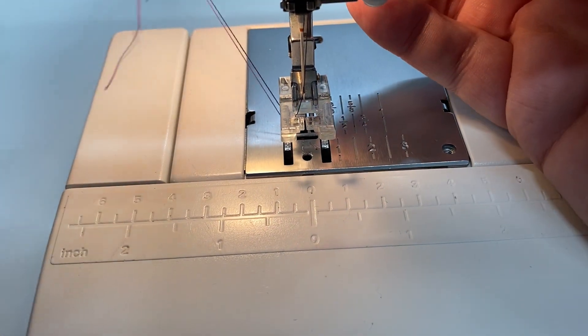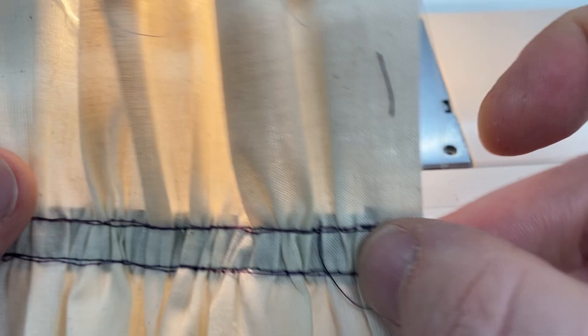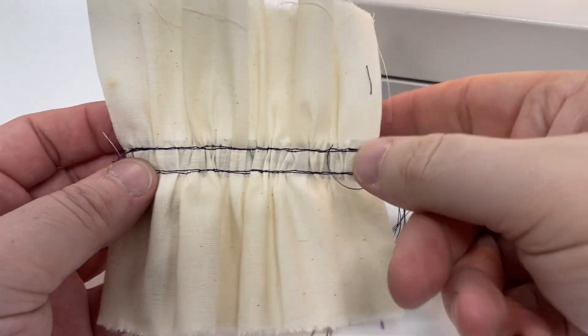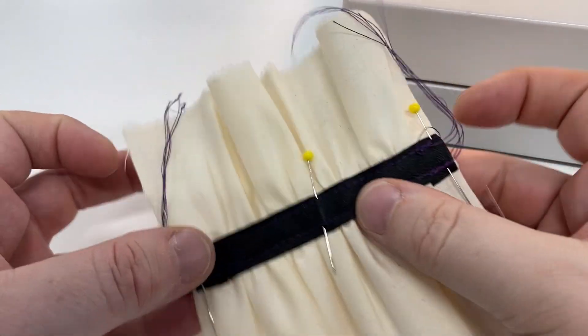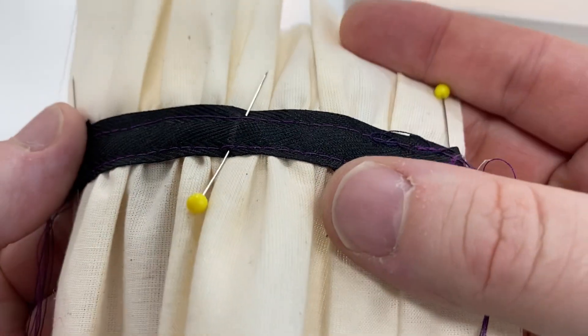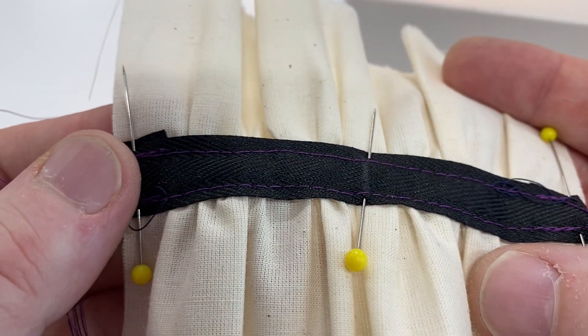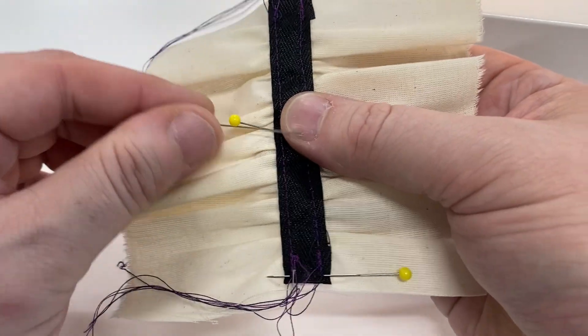And there you should have a very nice gathered piece of fabric right in the middle. And if you look at your tape, you'll see our stitch lines running down both sides. And that is how you secure a gather in the middle of a piece of fabric.